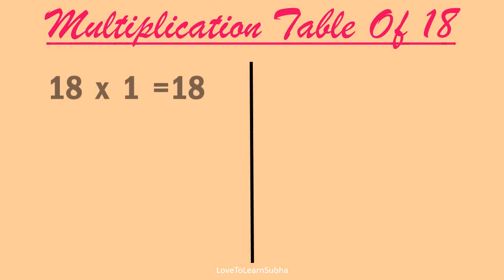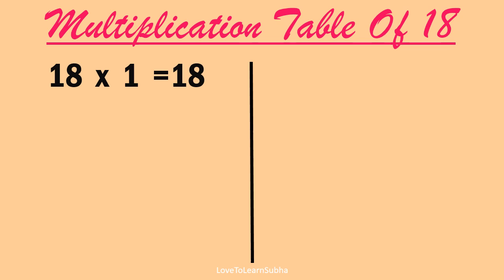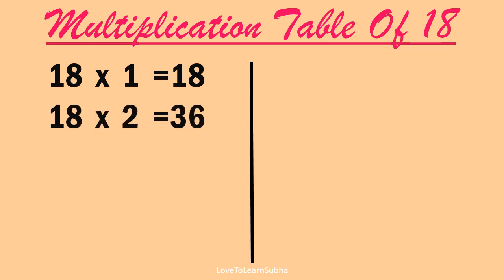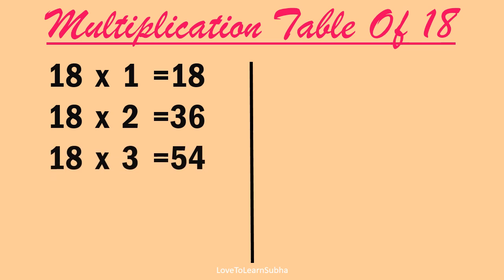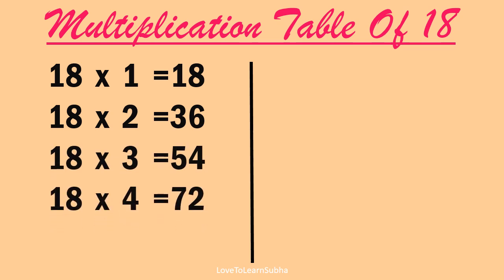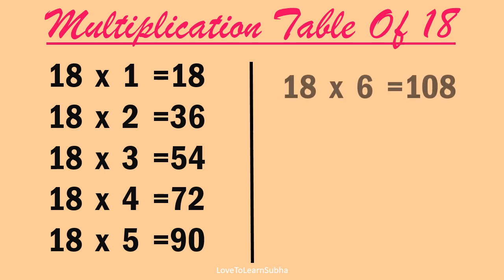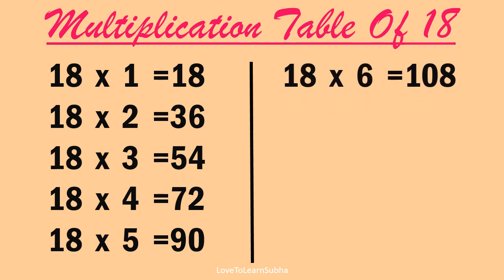18 1s are 18, 18 2s are 36, 18 3s are 54, 18 4s are 72, 18 5s are 90, 18 6s are 108.